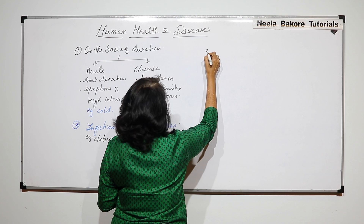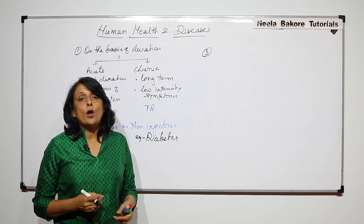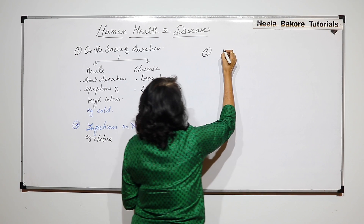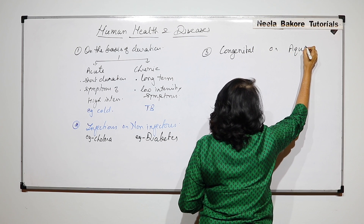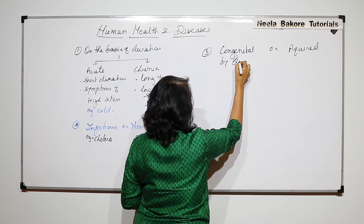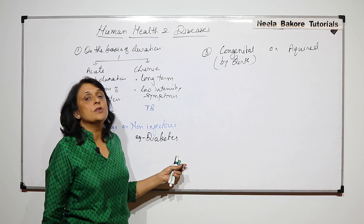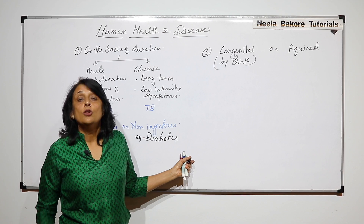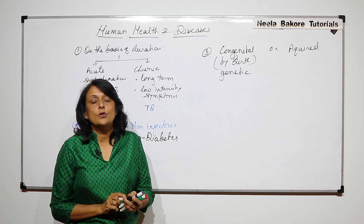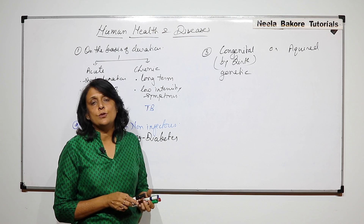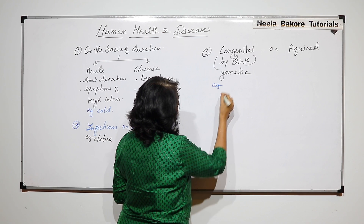The third classification is based on when we get the disease — are we born with it or do we get it after we are born? That gives us congenital or acquired. Congenital means by birth. Normally these congenital diseases are genetic, passed on from a parent to the offspring, or arising from a mutation. An example is Down syndrome.